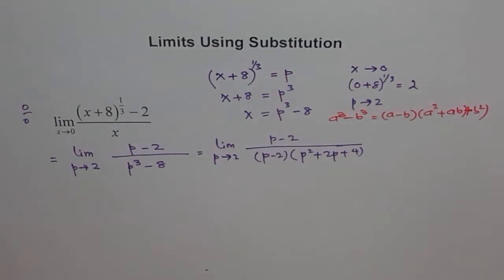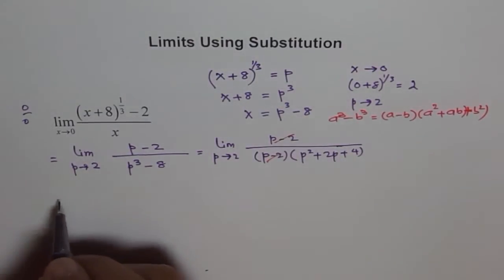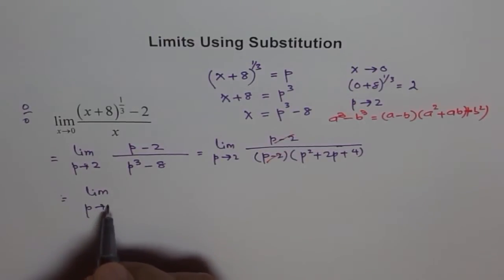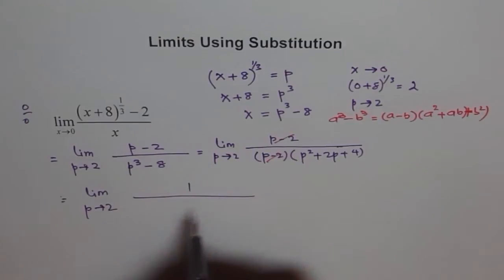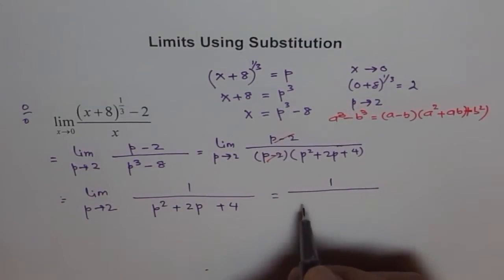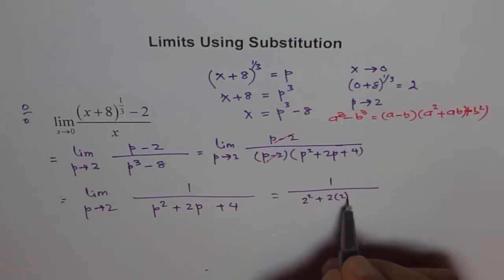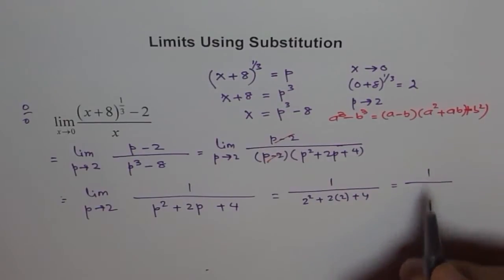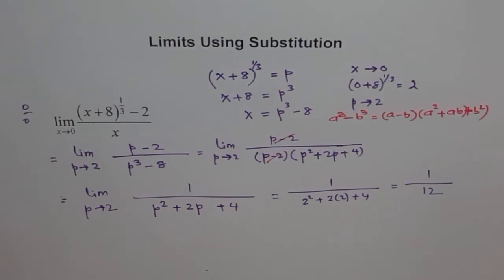We have a common factor (p minus 2) in the numerator and denominator, so we can simplify. This gives limit p approaches 2 of 1 over p squared plus 2p plus 4. Substituting p equals 2: 1 over 4 plus 4 plus 4, which equals 1 over 12.